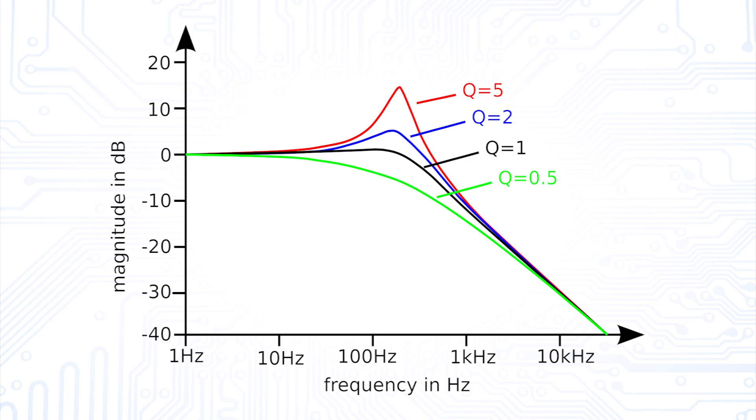Another advantage arises when we look at the Bode plot. Depending on the configuration of our filter, we achieve a different so-called Q-factor, which indicates how high the peak around the cut-off frequency is.